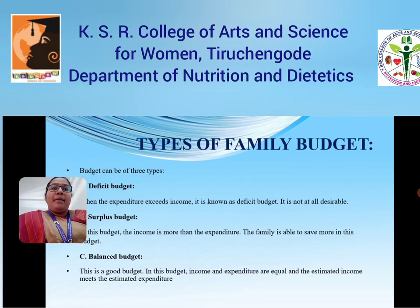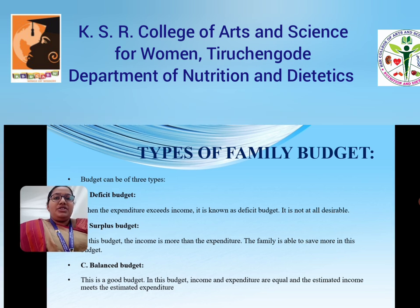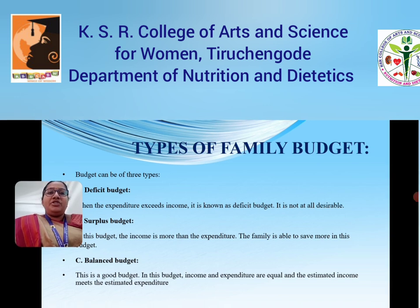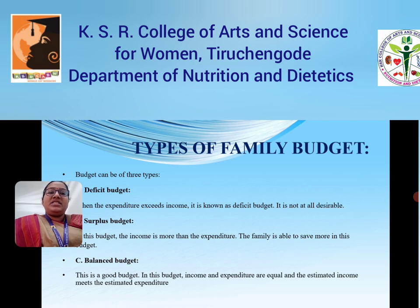There are three types of family budget: deficit budget, surplus budget, and balanced budget. A deficit budget is one where expenditure exceeds income, which is not desirable. In a surplus budget, income is more than expenditure and the family is able to save more. A balanced budget is a good budget system where income and expenditure are equal — the estimated income meets the estimated expenditure.